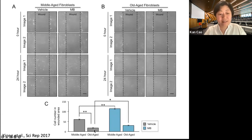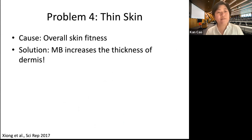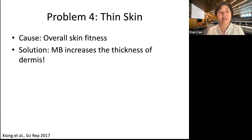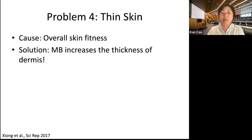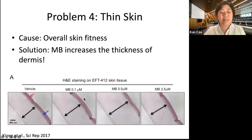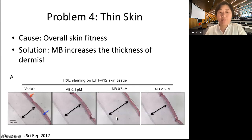Another problem we encounter with aging skin is thinning. As we age, our skin gets thinner and thinner. In our study using a 3D skin model, after methylene blue treatment we see an increase in skin dermal width, especially at 0.5 micromolar concentration. In summary, methylene blue shows beneficial effects on sagging skin, dry skin, and irritable skin associated with aging.